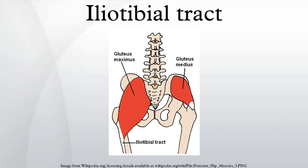The ITB stabilizes the knee both in extension and in partial flexion, and is therefore used constantly during walking and running. In leaning forwards with a slightly flexed knee, the tract is the main support of the knee against gravity.